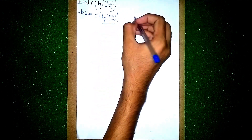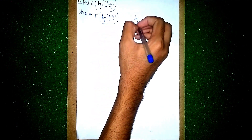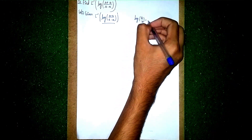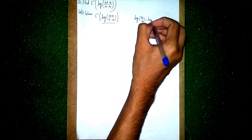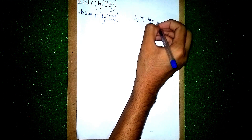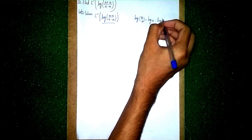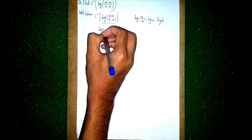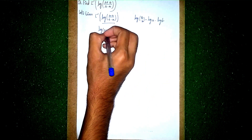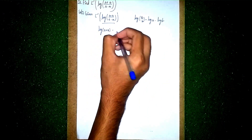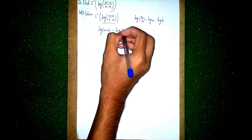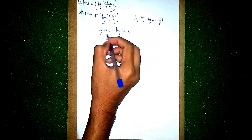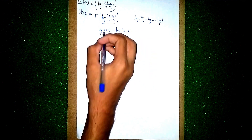We take this part. Using the logarithm formula: log(a/b) = log a minus log b. So it becomes log(s + a) minus log(s - a). Now differentiate these terms.